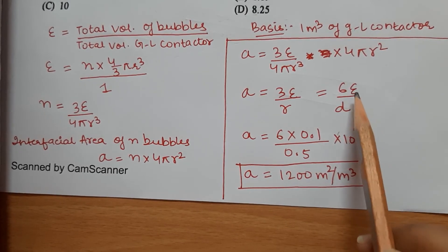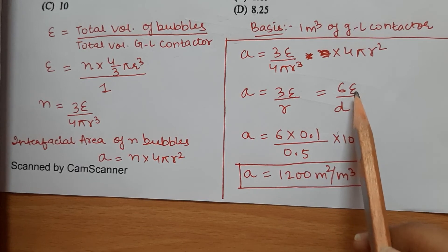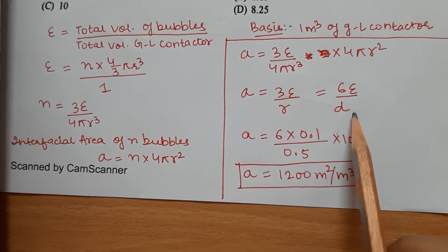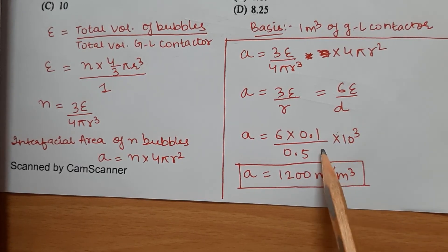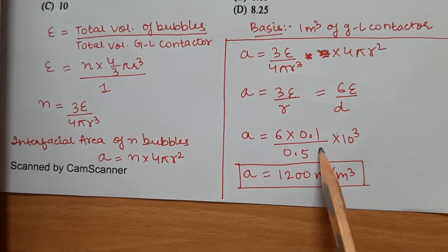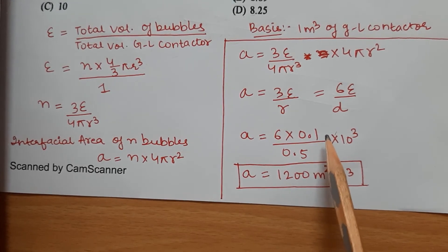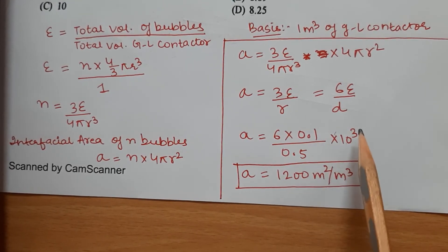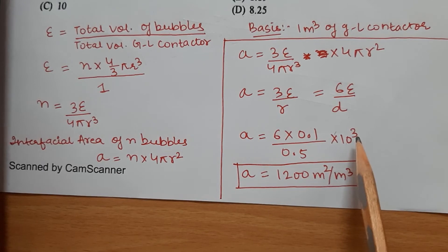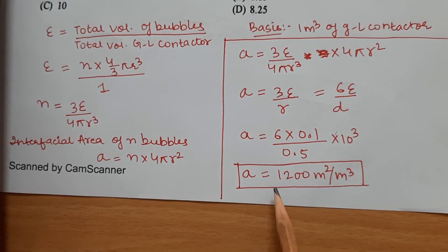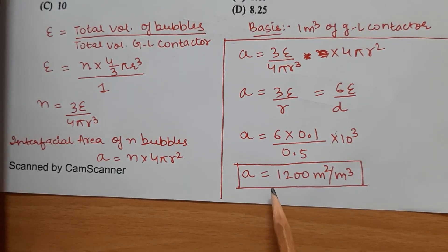The interfacial area of n bubbles is n·4πr² (surface area of a sphere). Substituting the value of n, the interfacial area per unit volume is 6ε/d. With ε = 0.1 and d = 0.5 mm = 5×10⁻⁴ m, the interfacial area is 1200 m²/m³.